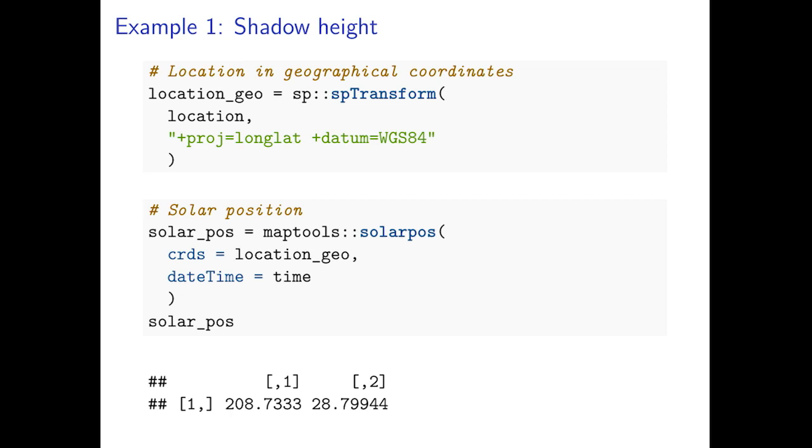And once we know the longitude, latitude and time we can use function solarpos from package maptools to calculate sun position. In this case the sun is located at azimuth angle of 209 degrees and elevation angle of 29 degrees.